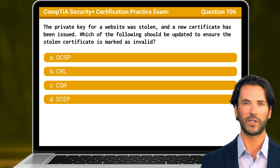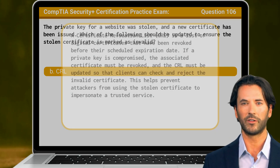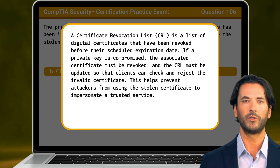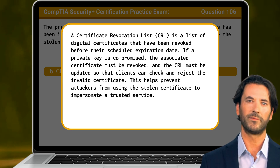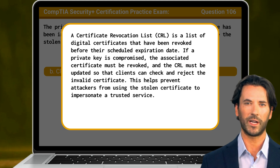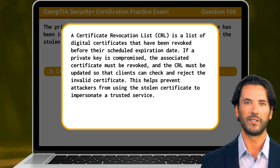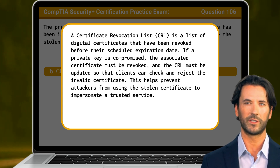The answer is B: CRL. A certificate revocation list, or CRL, is a list of digital certificates that have been revoked before their scheduled expiration date. If a private key is compromised, the associated certificate must be revoked and the CRL must be updated so that clients can check and reject the invalid certificate. This helps prevent attackers from using the stolen certificate to impersonate a trusted service.